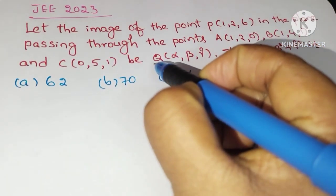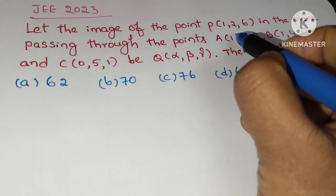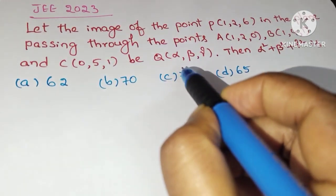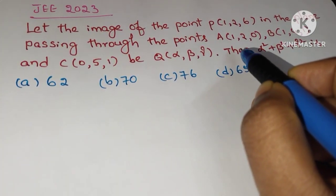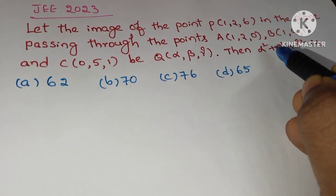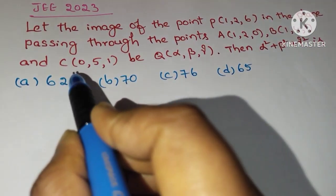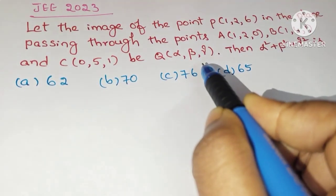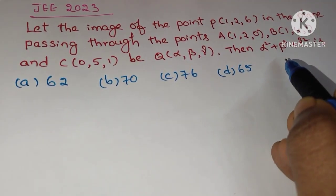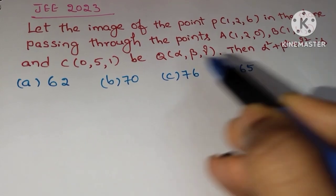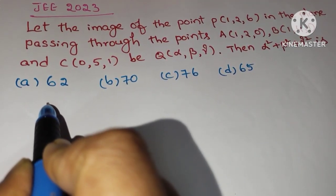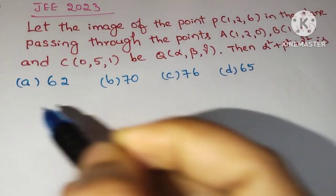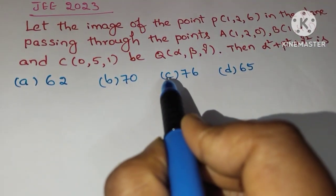Let the image of the point P in the plane passing through the points A(1,2,0), B(1,4,1), and C(0,5,1) be Q(α, β, γ). Then find α² + β² + γ². The given options are: option A: 62, option B: 70, option C: 76, option D: 65.